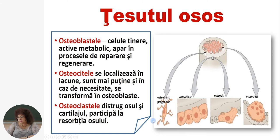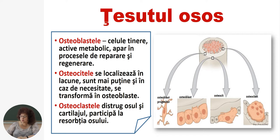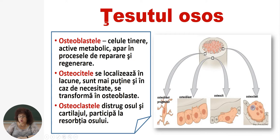Osteoblastele sunt celulele tinere, active metabolic, care apar în procesele de reparare și regenerare. Osteocitele se localizează în lacune, sunt mai puține și în caz de necesitate se transformă în osteoblast. Osteoclastele distrug osul și cartilajul și participă la resorbția osului. Prima celulă este osteoblast progenitor, din care se dezvoltă osteoblastul, celula tânără; urmează osteocitul, celula matură; și osteoclastul, care are rolul de a distruge osul.